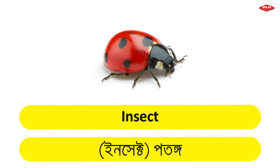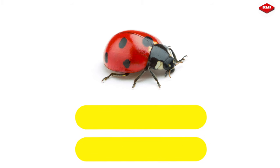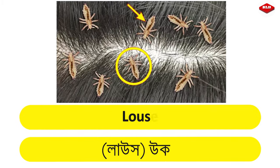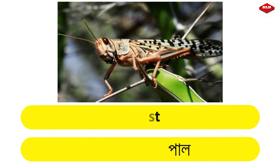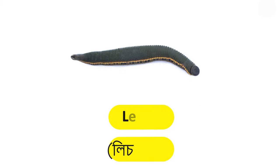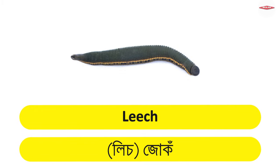Insect – Potongo. Louse – Ukun. Locust – Pongopal. Leech – Joke.